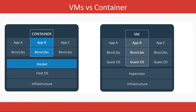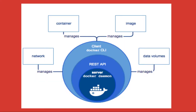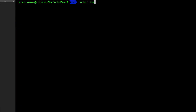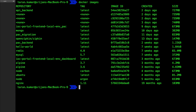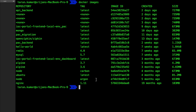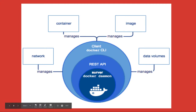The Docker Engine is a daemon process running on your host operating system, which allows you to create new Docker containers. There is a CLI interface, and from the CLI you trigger commands, which actually trigger REST API calls to the Docker daemon. The Docker daemon is already running on the host operating system.